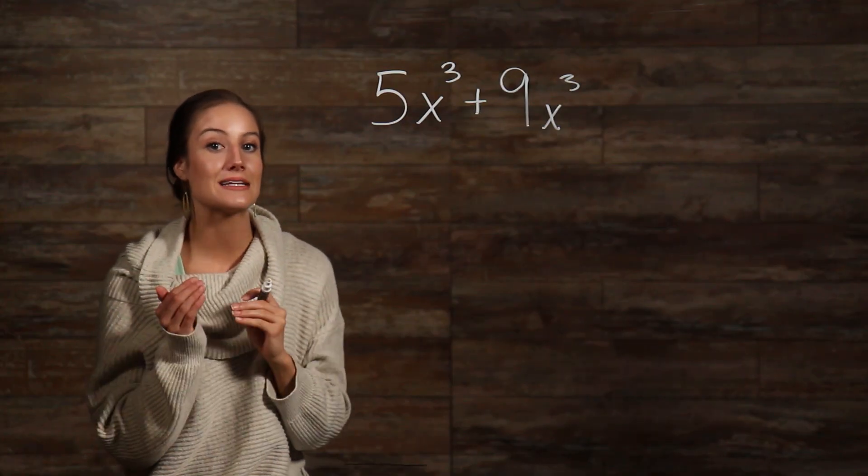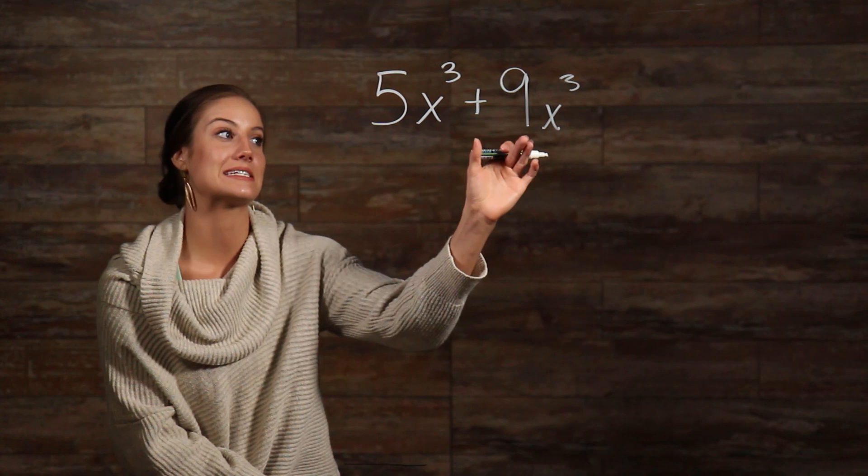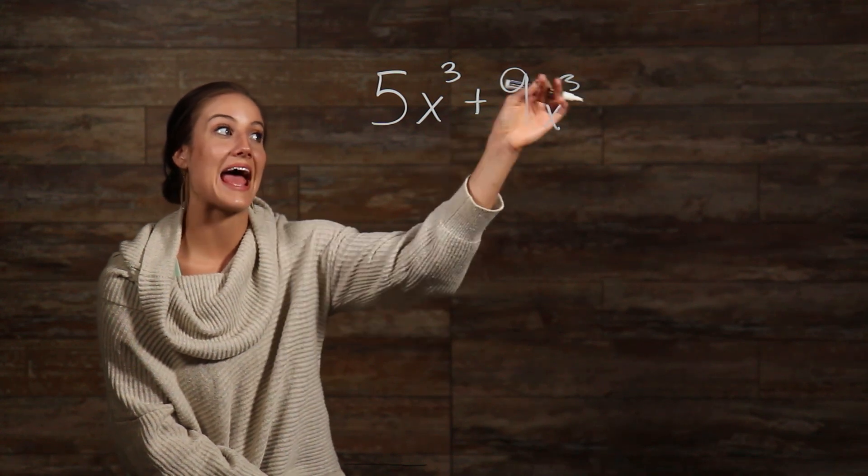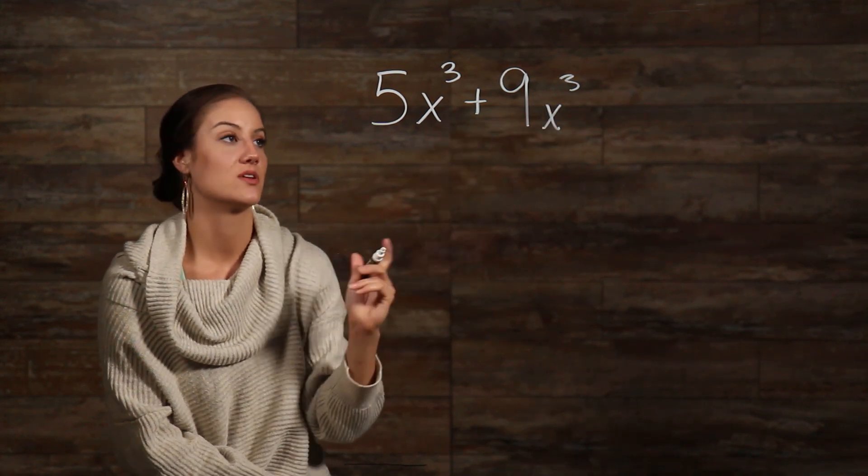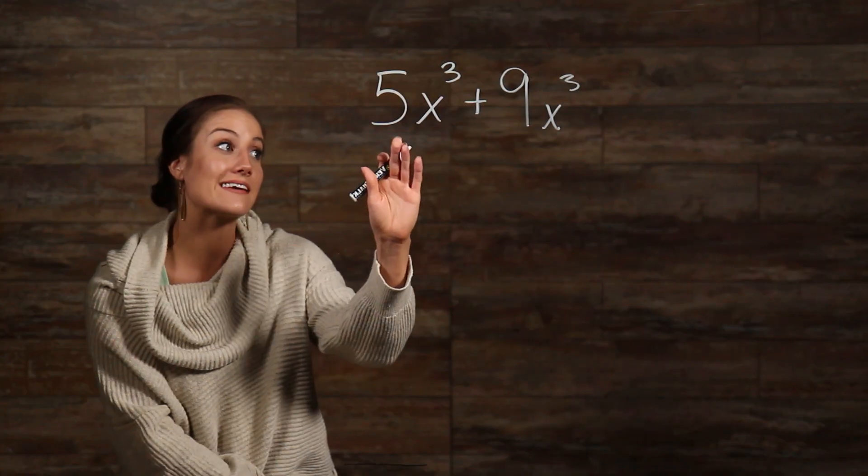So, to actually combine these terms, here's what you do. Add the coefficients together, but leave your base and exponents the exact same. In this problem, our coefficients are 5 and 9.